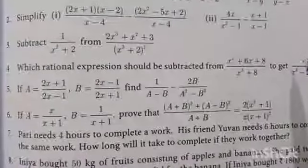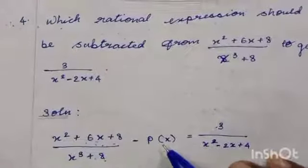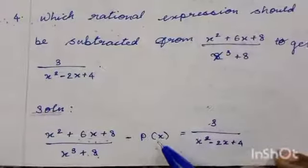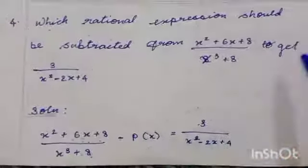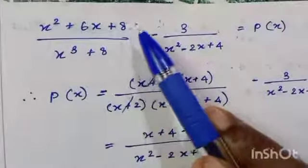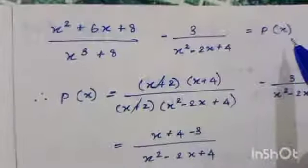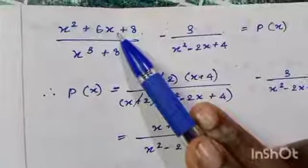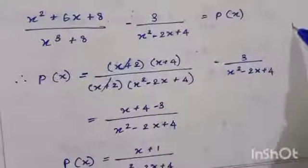Simplify the given expression. We consider the unknown expression as p(x). So: (x-squared plus 6x plus 8) divided by (x-cubed plus 8) minus p(x) equals 3 by (x-squared minus 2x plus 4). Apply transposing rules: the right-hand side expression moves to the left, and p(x) moves to the right. Now rewrite with factors: x-squared plus 6x plus 8 factors as (x plus 2)(x plus 4).